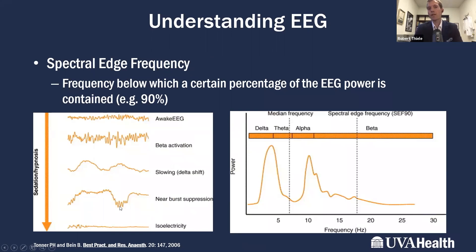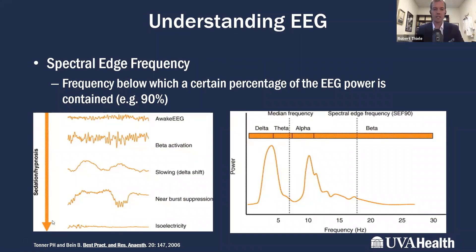Spectral edge frequency is the frequency below which most of the power is contained. You can pick whichever cutoff you want — typically it's 90%. So the spectral edge frequency, you can think of it as: if you plot a waveform in the frequency domain, where's the cutoff where 90% of the power occurs?